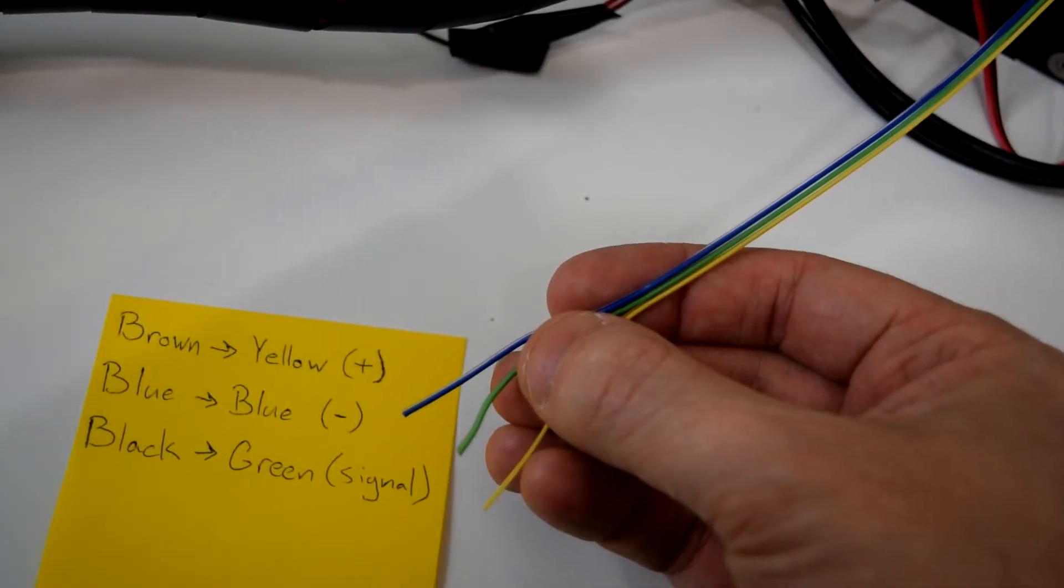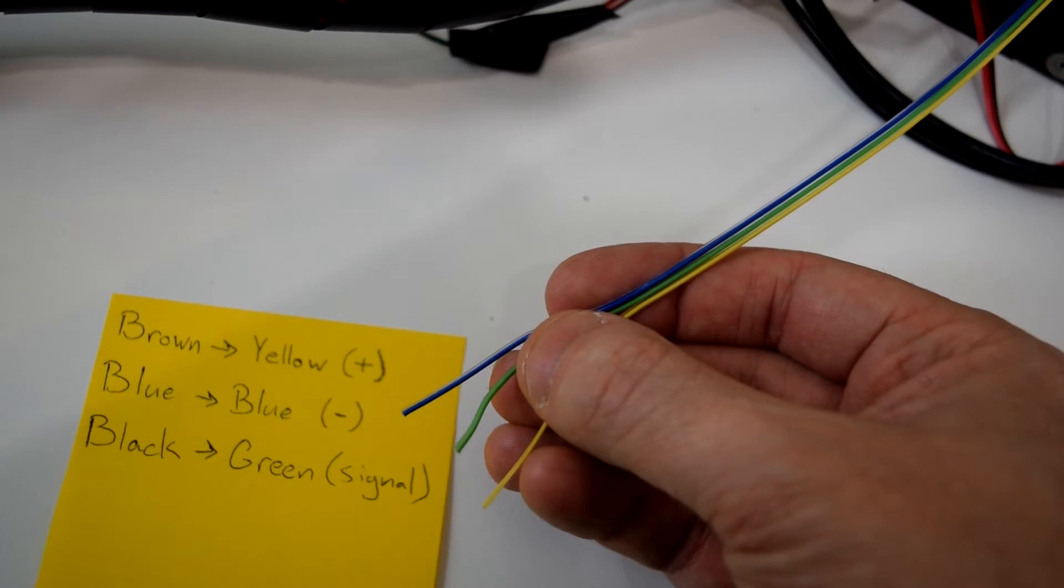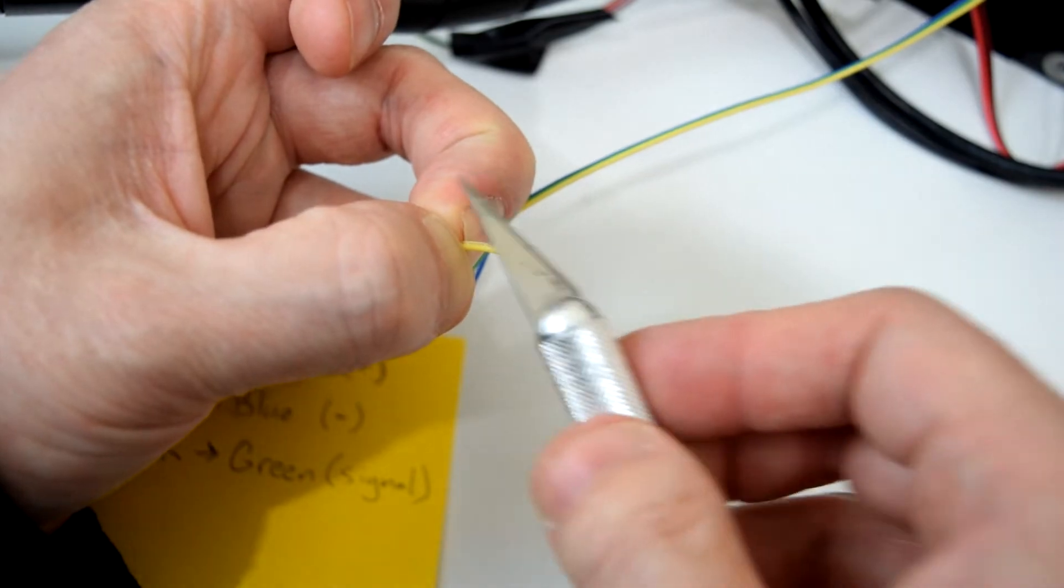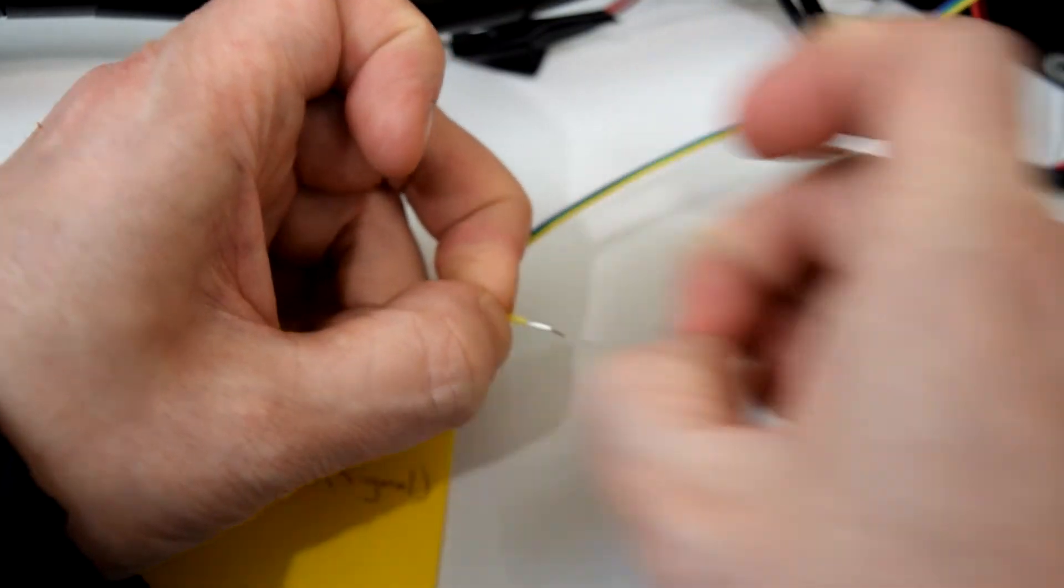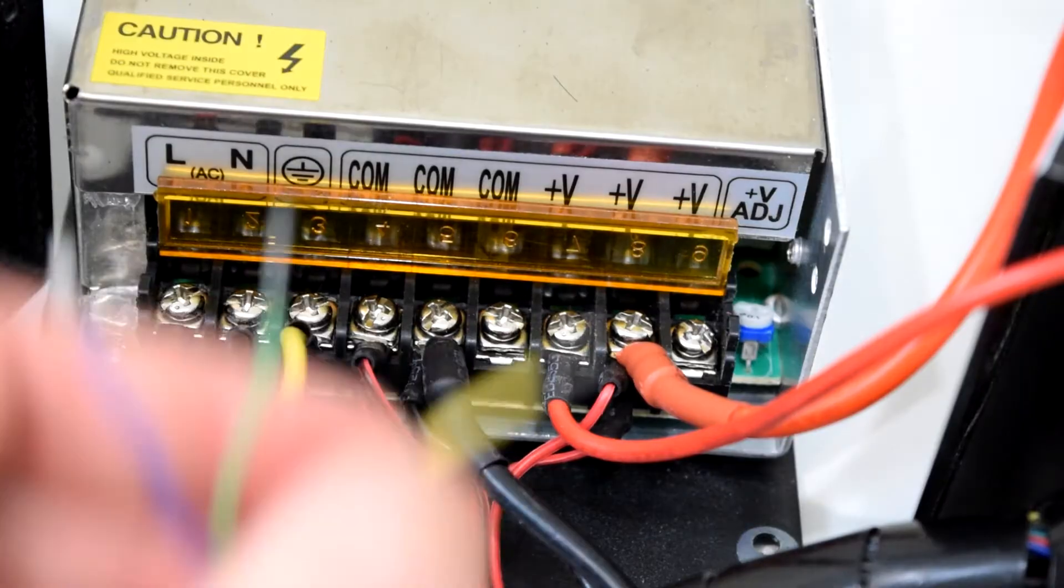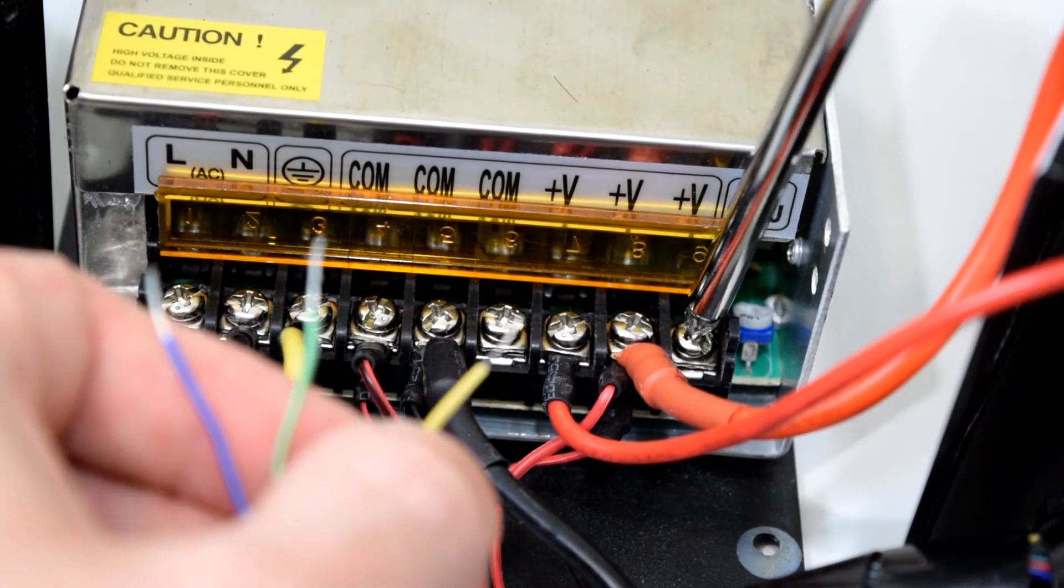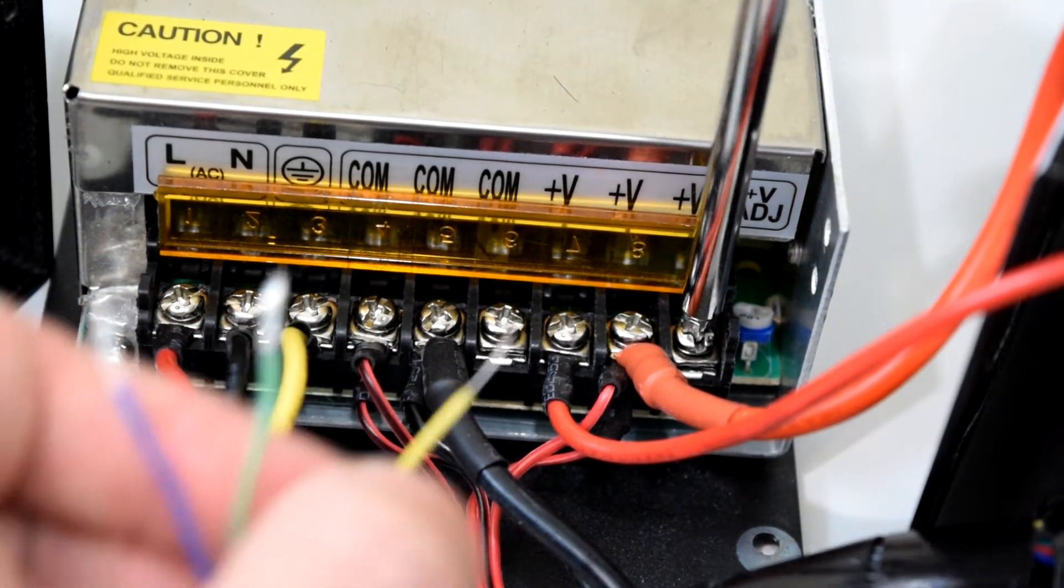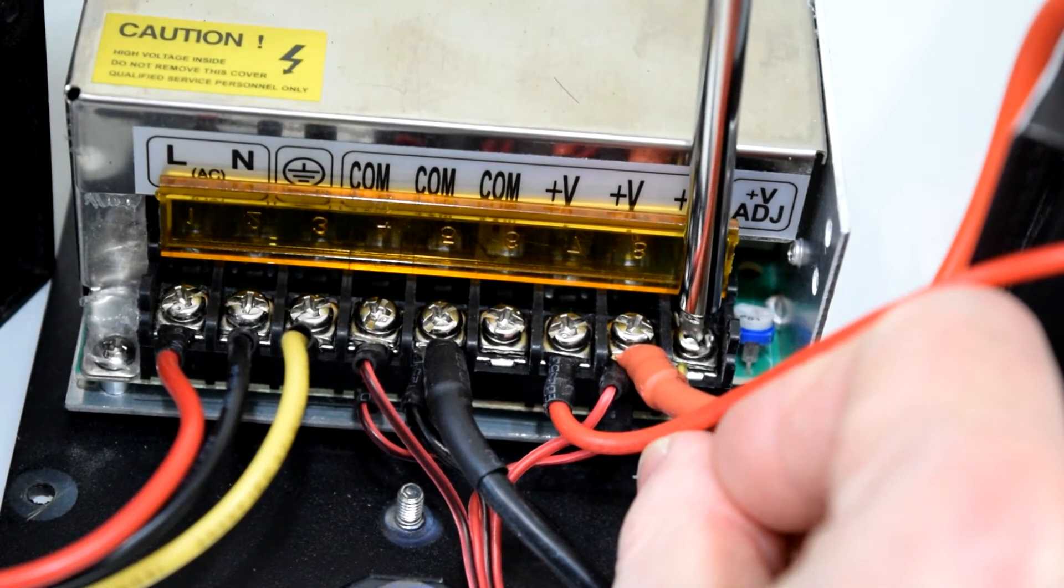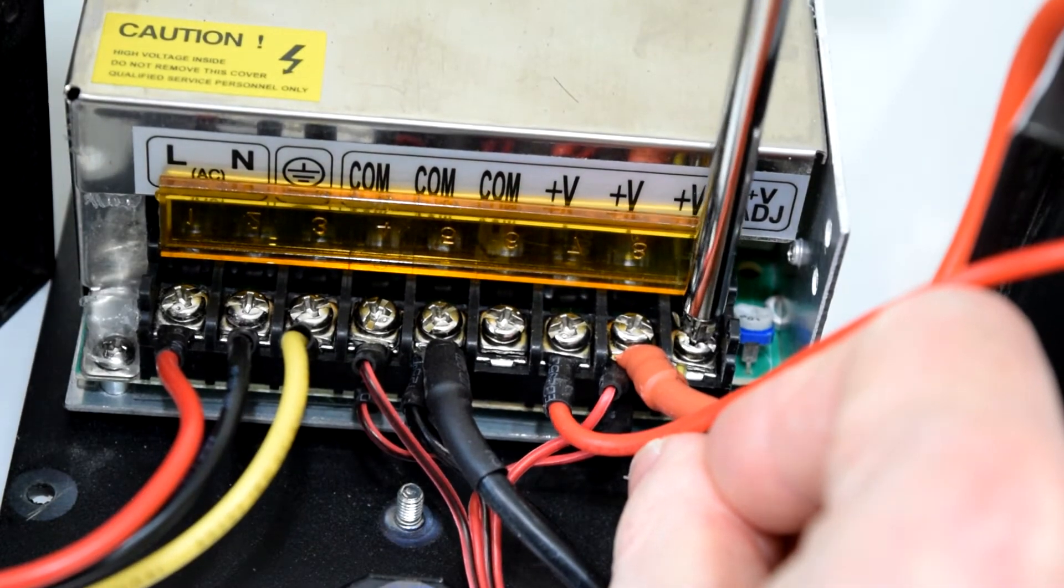At this point, you can go ahead and connect the positive wire coming from the brown wire on your sensor to one of the plus V terminals on your power supply. The voltage divider circuit only involves the signal wire and the ground wire. If all of the terminals on your power supply have something attached to them, it's okay. You can just attach the wires to whichever terminal has enough space.